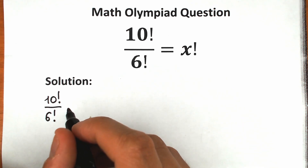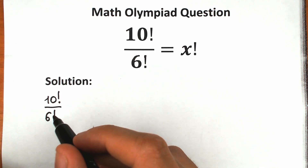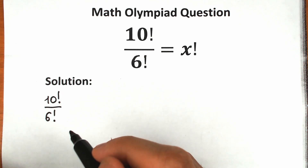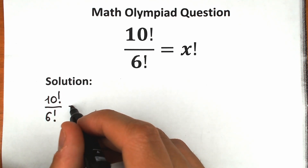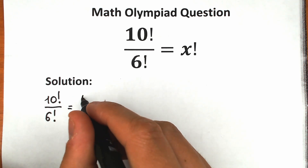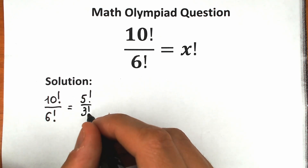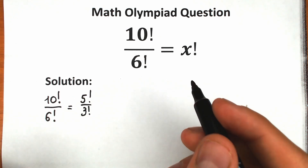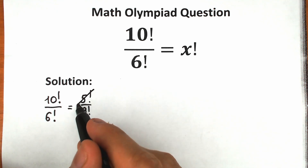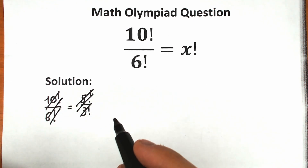A lot of students make this common mistake — they think they can cancel the 10, or divide numerator and denominator by 2. For example, dividing by 2 gives 5 factorial over 3 factorial. This is the most common mistake, and it's a really bad solution. Just forget about it.